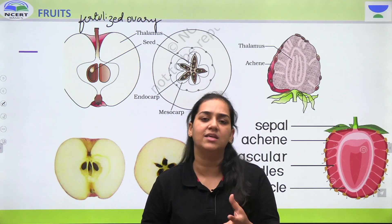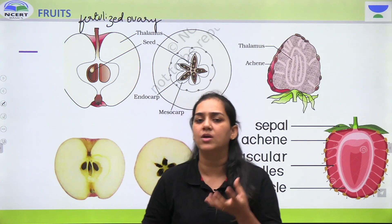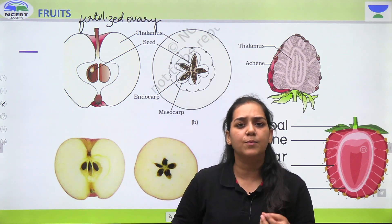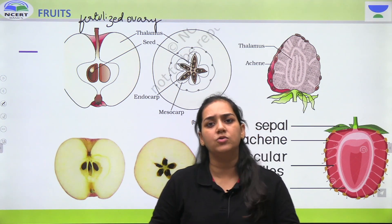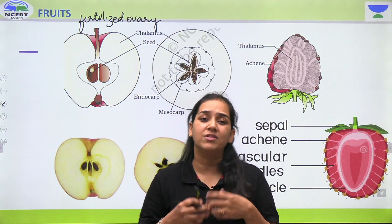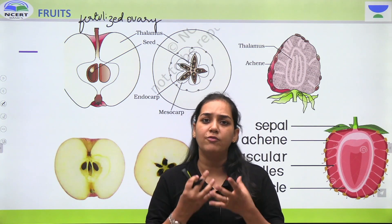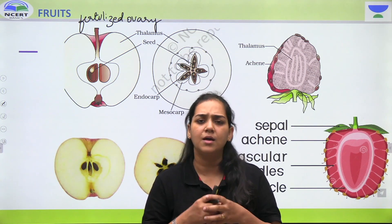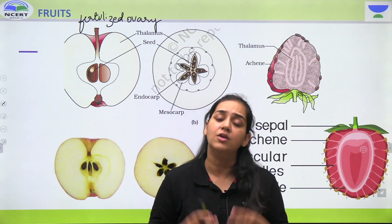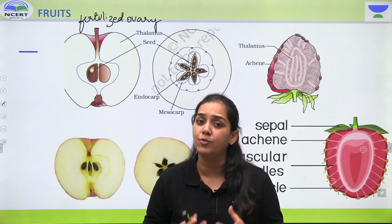Yeh jo sare whorls the — corolla ho gaya, calyx ho gaya, androecium ho gaya — yeh sab kuch degenerate ho chuka hoga, yeh sab kuch wither away, fall off ho chuka hoga from the flower. Ab humare paas bacha hai sirf ovary jo transform ho chuki hai fruit ke andar.